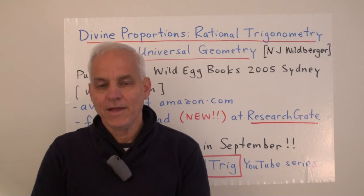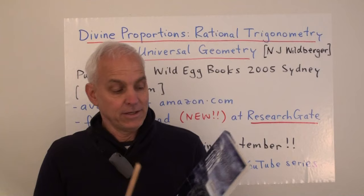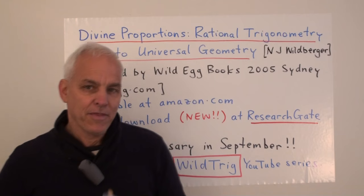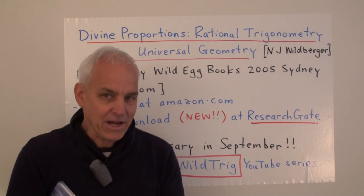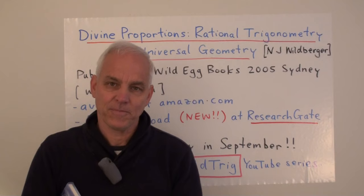Hello everyone, I'm Norman Wildberger. In this one-off video, I want to tell you a little bit about my book, Divine Proportions: Rational Trigonometry to Universal Geometry. This is a good occasion because we are quickly approaching the 10-year anniversary of the publication of this book, which was September 2005.